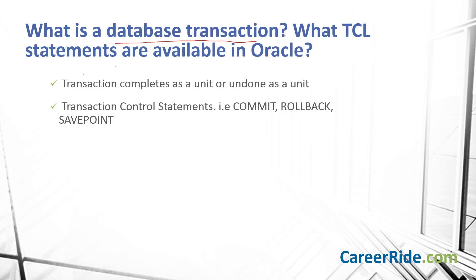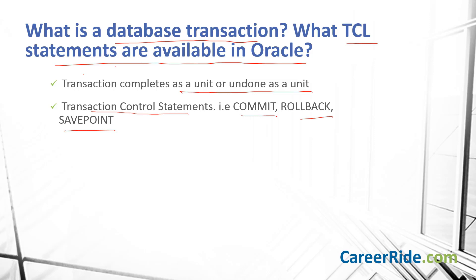What is a database transaction and what TCL statements are available in Oracle? A transaction occurs when a set of SQL statements are either completed as a unit or undone as a unit. To control the execution of these statements, Oracle has introduced TCL — Transaction Control Statements — which includes COMMIT, ROLLBACK, and SAVEPOINT. COMMIT is used to make a transaction permanent. ROLLBACK is used to roll back the state of a transaction to the last commit point. SAVEPOINT helps to specify a transaction point to which a rollback can be done later.